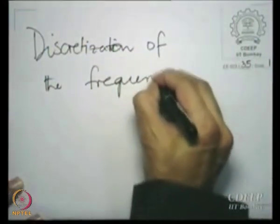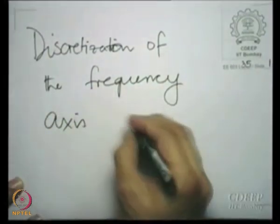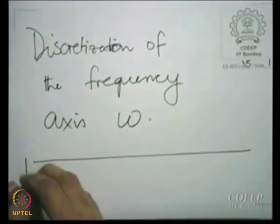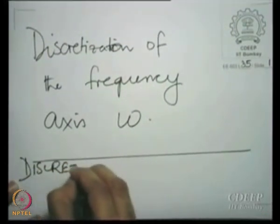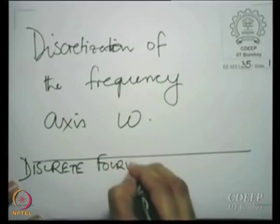All this while, we have assumed that the transformed domain only needs to be calculated. We haven't quite thought about how it should be depicted on a computer. And if we do depict it on a computer, we have no choice but to discretize that domain — nothing continuous can really be represented on a computer. So what we are going to do today is to discretize the frequency axis, and that would lead us to what is called the discrete Fourier transform.